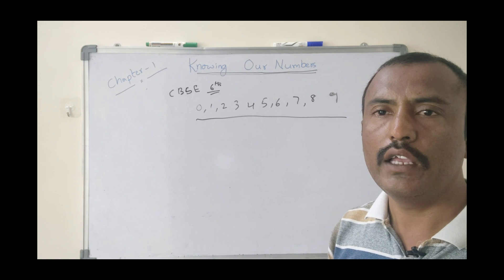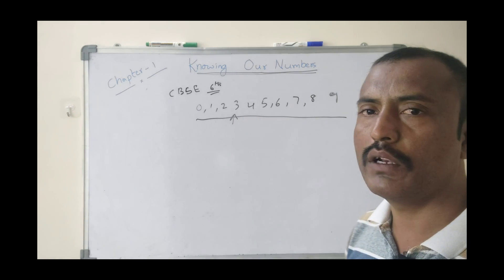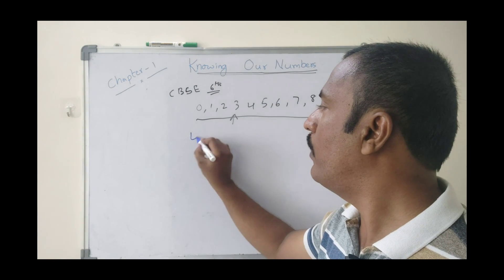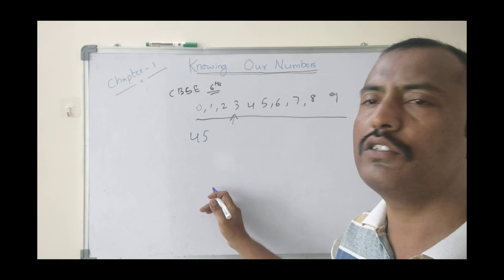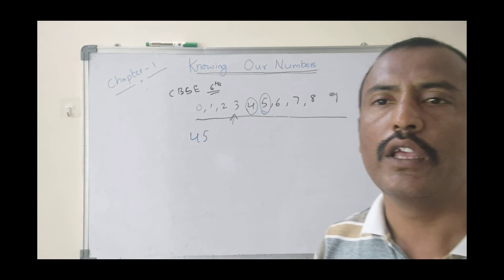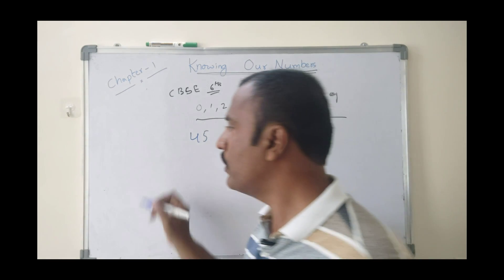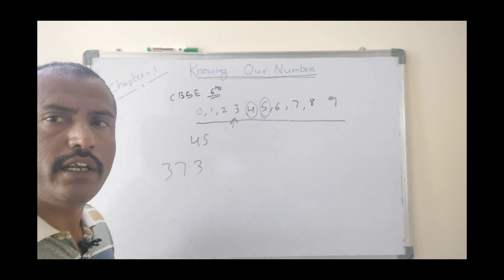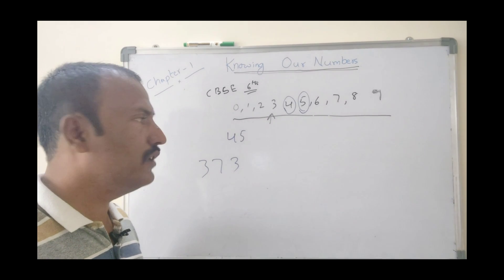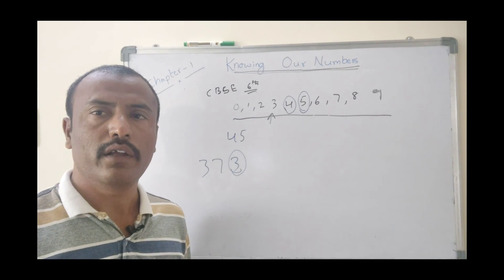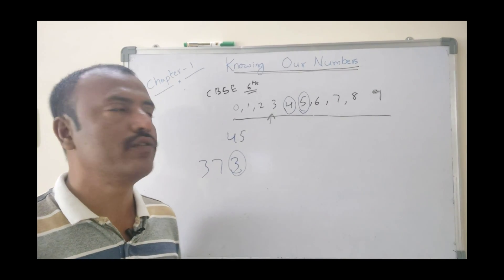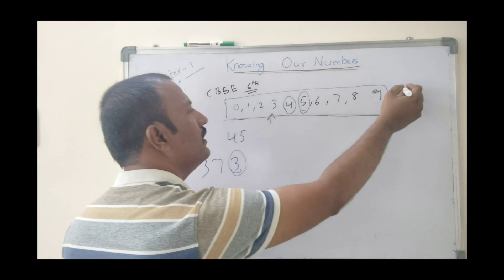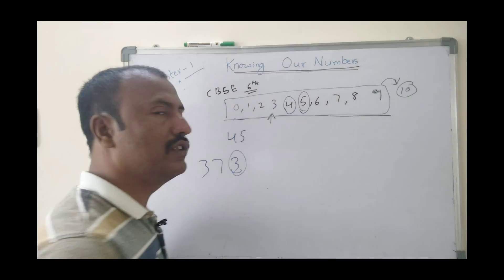Any number is formed with these digits only. For example, 45 is a number — it is a combination of digits 4 and 5. Another number, 373: digit 3, digit 7, and digit 3. In general, any number you can form with these 10 digits — 0 through 9 — total 10 digits.